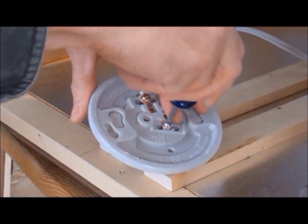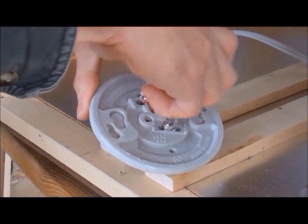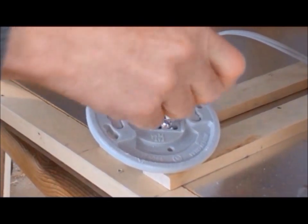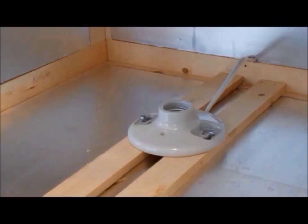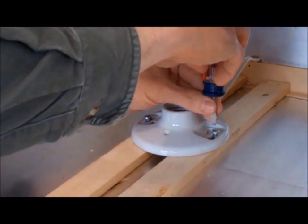Hook up the two wires from the cord to each of the two connections on the bottom of the lamp base. And screw the base back in place.